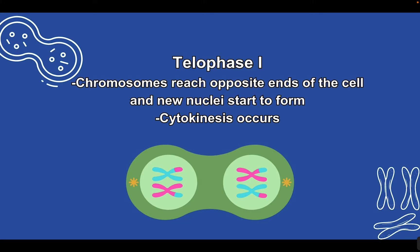Then we enter telophase I. The chromosomes have reached the opposite ends of the cell, and new nuclei start to form. To end the cell cycle we would go into cytokinesis. However, these cells still have 46 chromosomes — we need to get them to haploid, to half. So we jump right into the second stage: meiosis II.